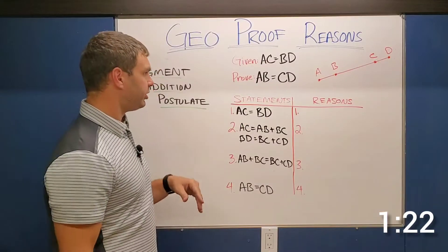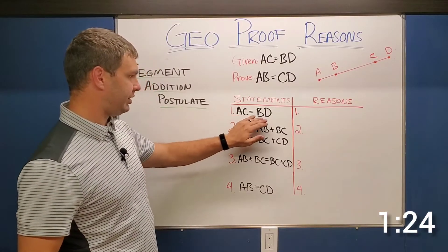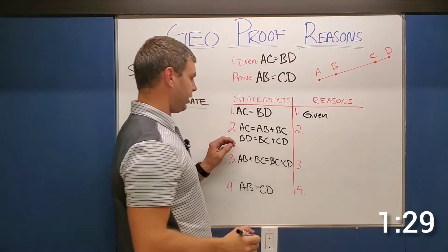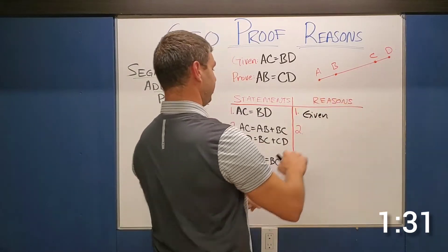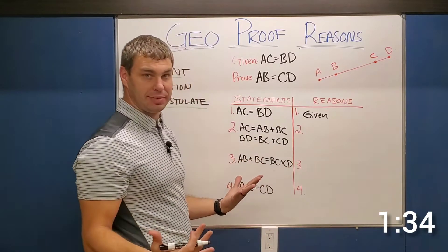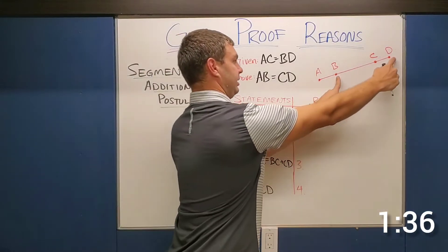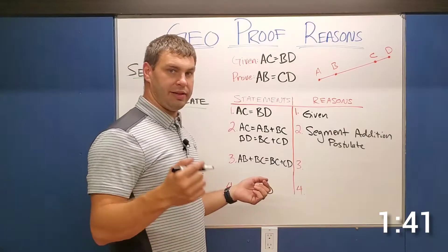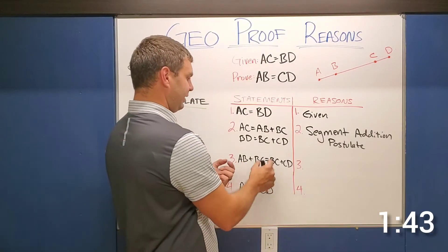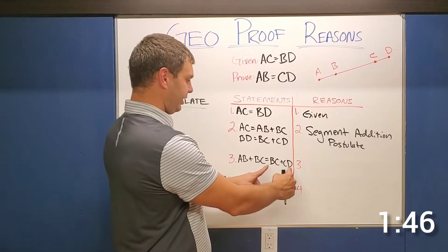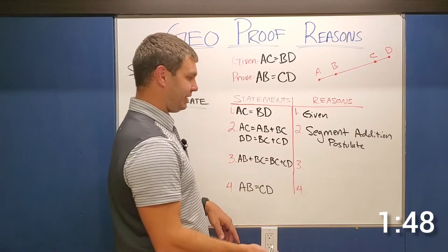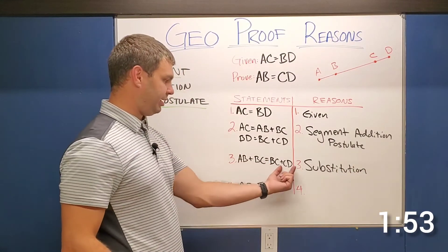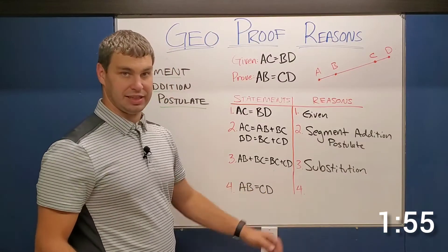Proof example number two. We're first given AC equals BD — of course, this is our given. AC equals AB plus BC — that's segment addition. The same thing: BD equals BC plus CD — so those both are going to be segment addition. Then by substitution, I can substitute those in and say that AB plus BC equals BC plus CD. And then lastly, if I subtract BC from both sides, I'm just left with AB equals CD — and that's by subtraction.